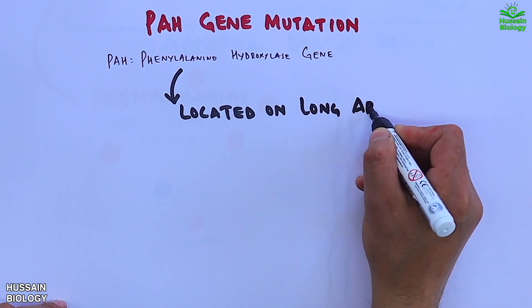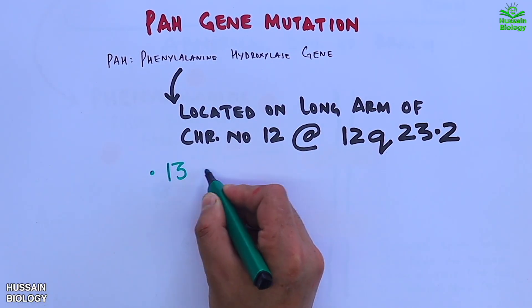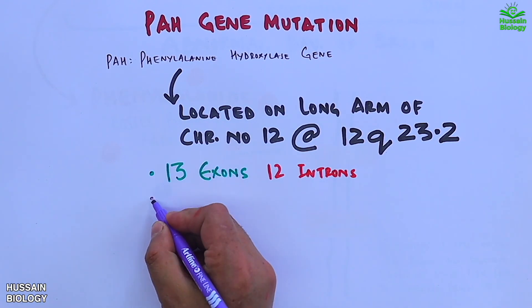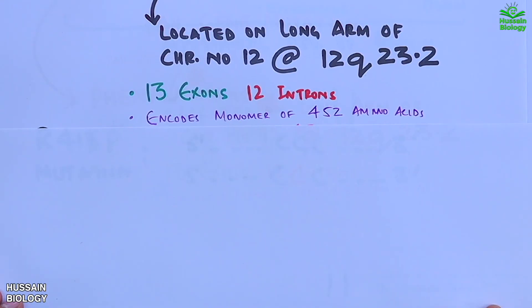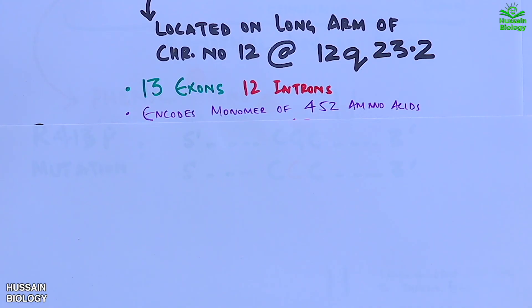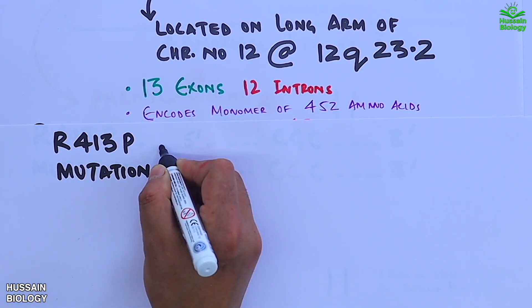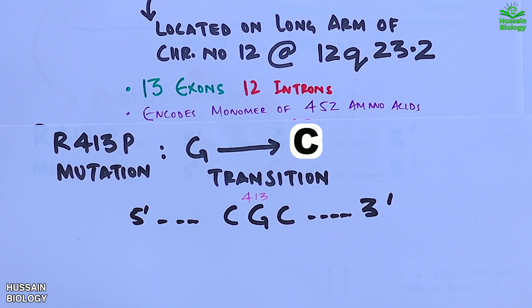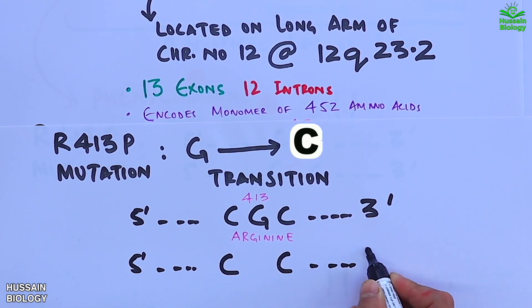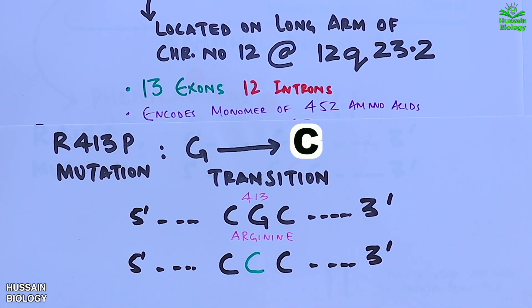The PAH gene is located on the long arm of chromosome 12 at 12q23.2. It has 13 exons and 12 introns, encoding a monomer of 452 amino acids. Regarding PAH gene mutation, there is a diversity of mutations, one of which is the R413P mutation involving a G-to-C transition. The normal sequence CGC at position 413 codes for arginine, but with the mutation, G is replaced by C giving CCC, which codes for proline, thereby changing the whole sequence.